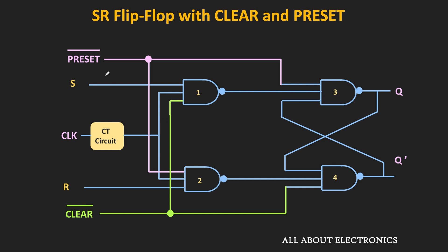Similarly, when the preset input is 0 and the clear input is 1, the output of the third NAND gate will become 1, and at the same time the output of the second NAND gate will also become 1. Now Q is 1, the clear input is 1, and the output of the second NAND gate is also 1 — so all three inputs of the fourth NAND gate are equal to 1, and therefore Q' becomes 0. In this way, with preset = 0 and clear = 1, we get the proper Q and Q' outputs. This is the correct circuit of the SR flip-flop with active-low clear and preset inputs.